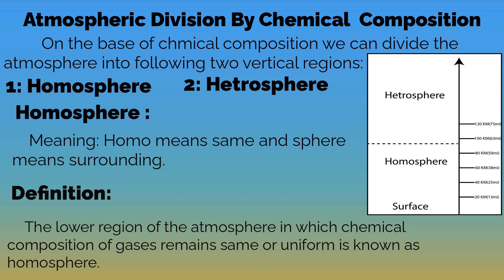We divide the atmosphere into the homosphere and heterosphere. The region which is a homogeneous mixture is called the homosphere, and the region which is a heterogeneous mixture is called the heterosphere. Homosphere — 'homo' means same, uniform, or unchanged, and 'sphere' means surrounding.